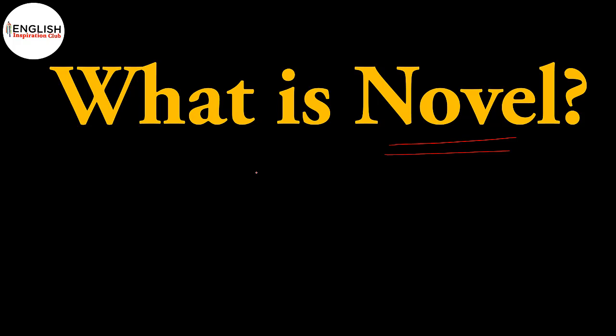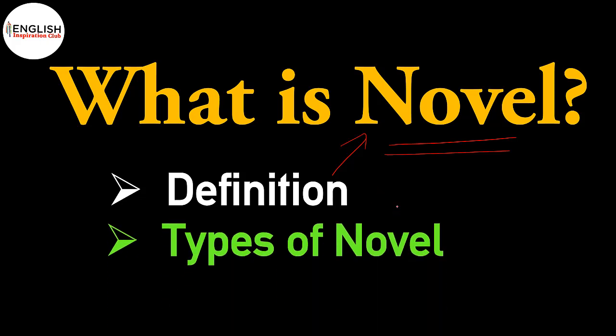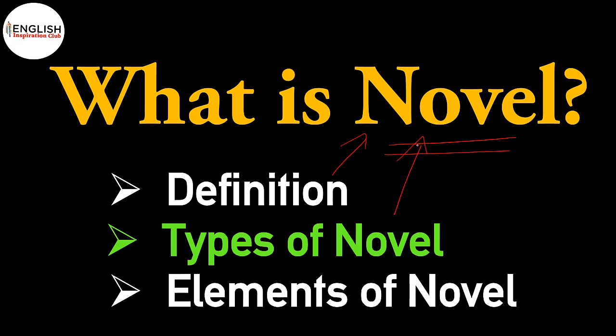So, let's talk about what we will discuss in today's important session. That would be the definition related to the novel. Along with this, we will discuss types of novel — which types are important in English literature — and related works or novels. Our topic will also cover the elements of novel: which elements are needed when we write a novel, and which elements are most important for a novel.